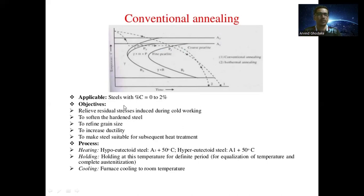The objectives of conventional annealing are: to reduce or relieve residual stresses induced during cold working, to soften hardened steel, to refine grain size, to increase ductility, and to make steel suitable for subsequent heat treatments.